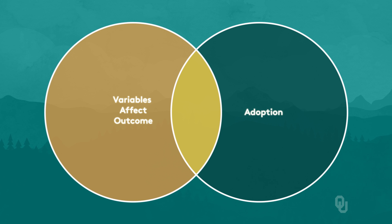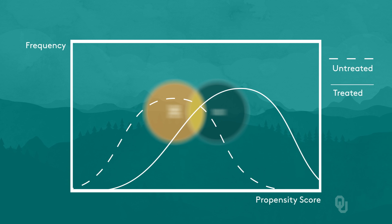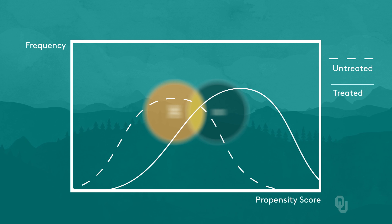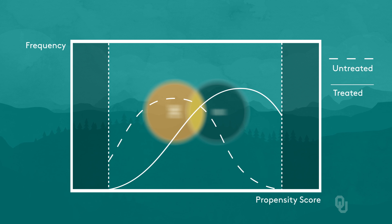After estimating the first stage model, we then need to check for common support. This can be done by simply graphing the distribution of the estimated probabilities of policy adoption for the treated and untreated units and comparing them. The more overlap, the better. Treated units outside the support of the controls are discarded when estimating the treatment effect, which, as we noted, is a big difference from the regression approach.